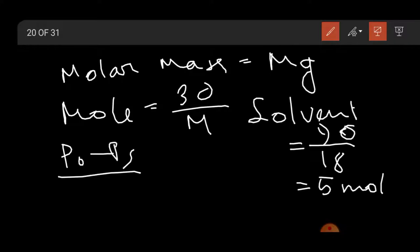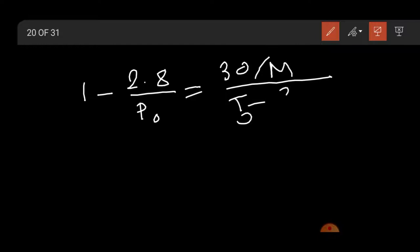Po minus Ps divided by Po equal to n2 by n1 plus n2. So 30 by m and 5 plus 30 by m. Ps is given 2.8, so this will be 1 minus 2.8 divided by Po equal to 30 by m divided by 5 plus 30 by m.